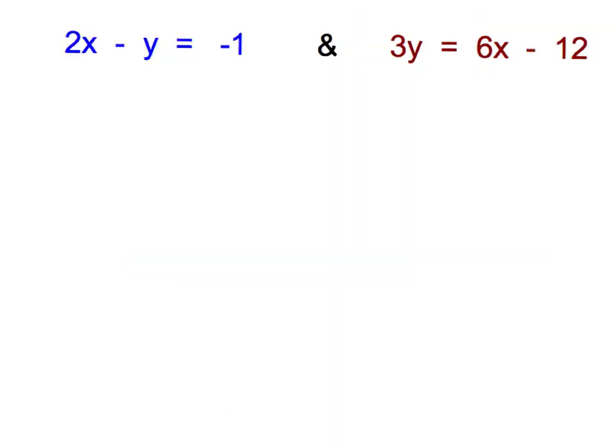Let's take a look at an example. Please write down these two equations — this system — and we're going to solve it graphically. Remember that our first step is to make sure our equations are in slope-intercept form. I'm going to start with the blue equation on the left, which is definitely not in y = mx + b form, so I'll need to do some inverse operations to solve for y.